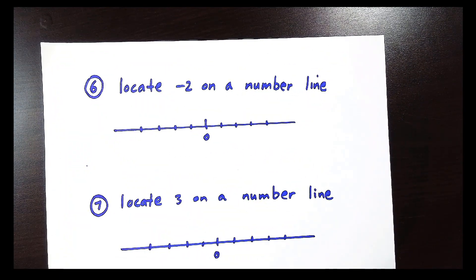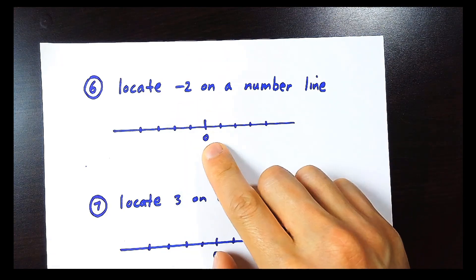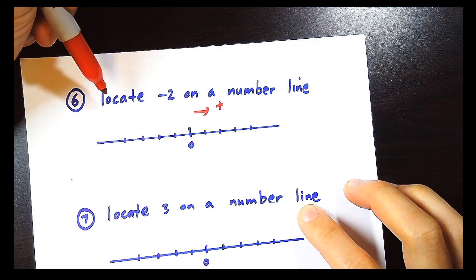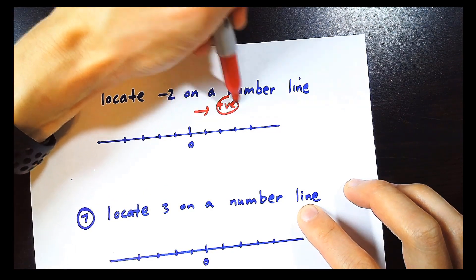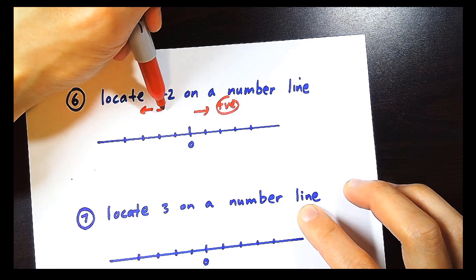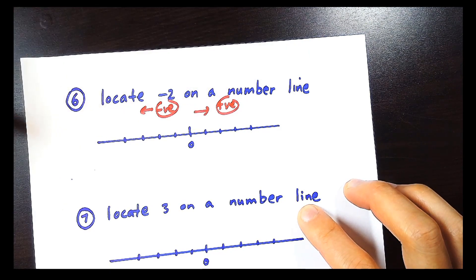So we're going to now locate negative 2 on a number line. Minus 2 and negative 2 is the same thing. Zero is in the middle. So towards the right, we consider this a positive number. Positive. And towards the left of 0, we're going to consider this a negative number. A negative number.